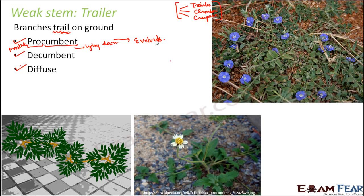The next type is decumbent. In decumbent, the stem trails on the ground for some time, but then it rises at the apex. Initially the stem is trailing on the ground, and then when it reaches its tip, it suddenly rises vertically upwards. So in procumbent, the stem always trails on the ground, whereas in decumbent it trails for some time and then rises towards its apex. One example of decumbent would be tridex.